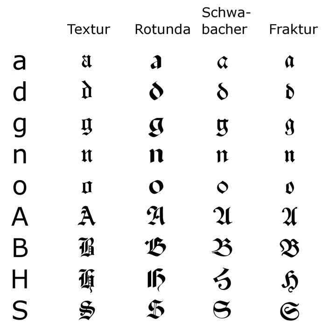In Danish texts composed in Fraktur, the letter ø was already preferred to the German and Swedish ö in the 16th century.